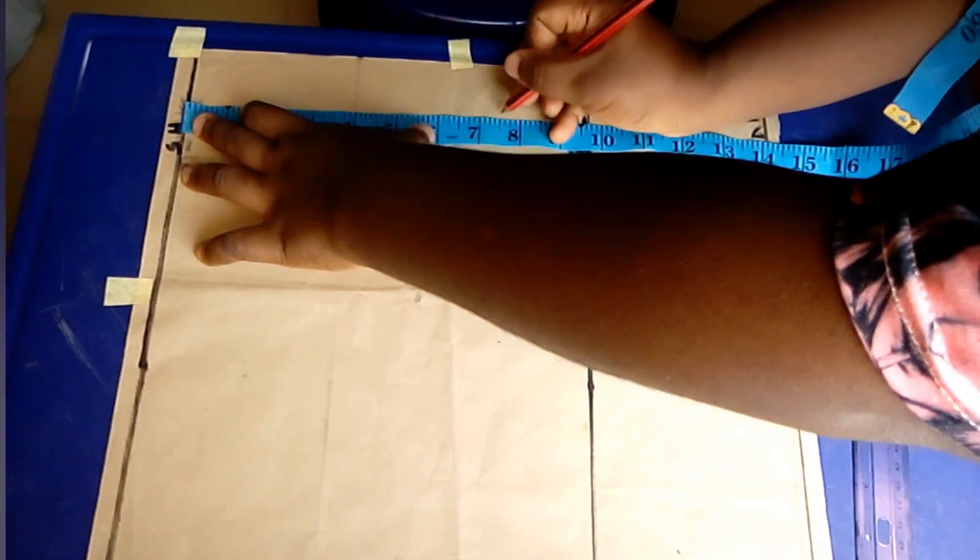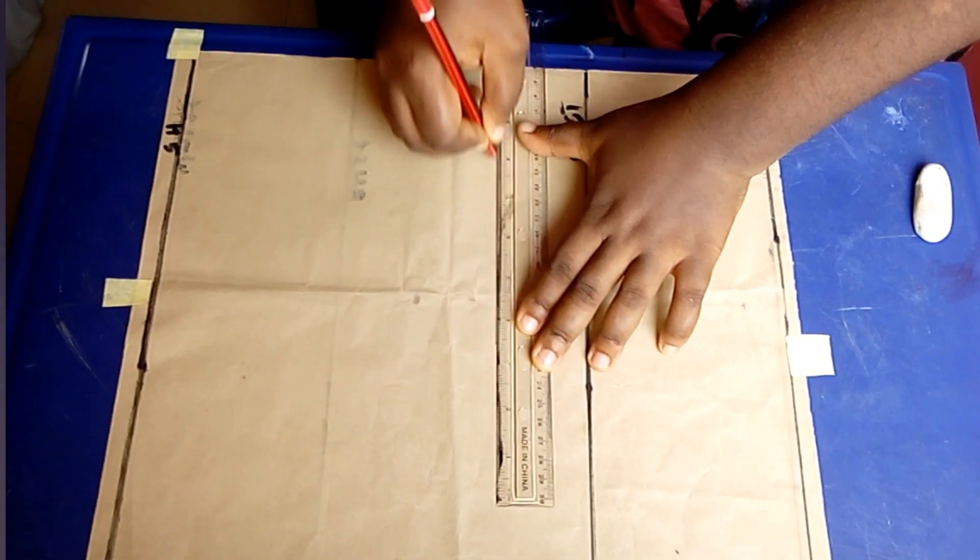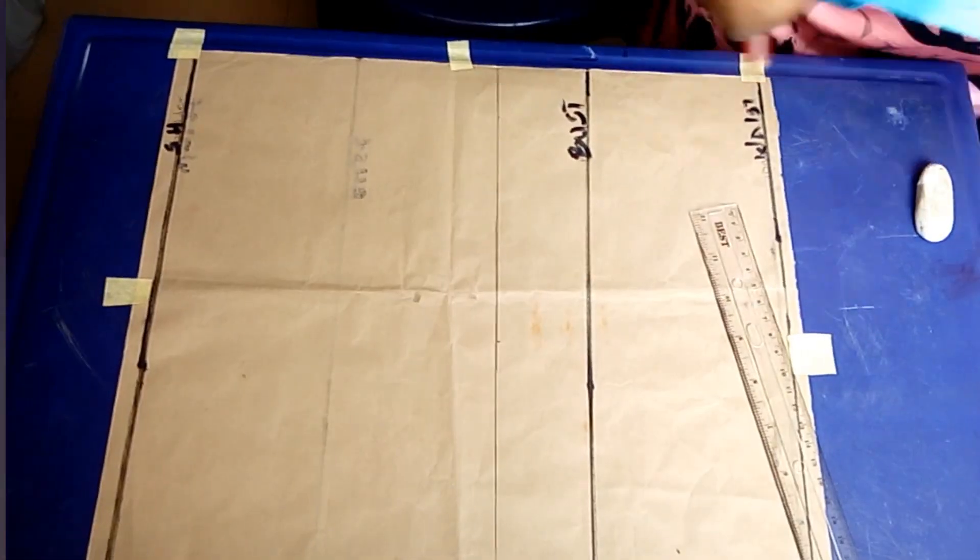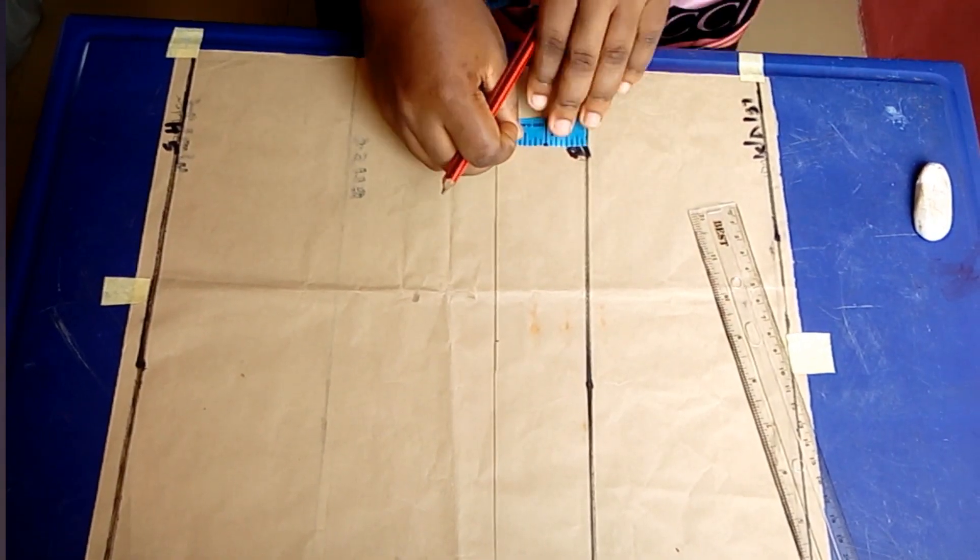I'll mark it across the paper and then go in with my ruler and rule a straight line across. You can also come up by two inches on your bust points in order to get your chest measurements if you didn't take the round armhole or chest measurement.